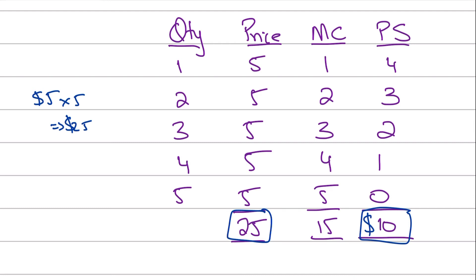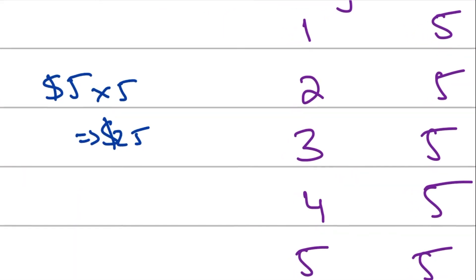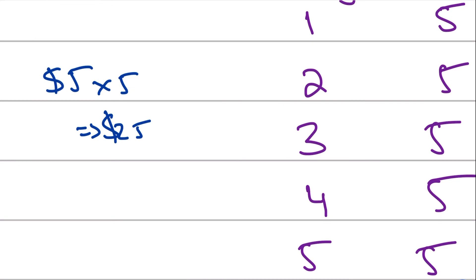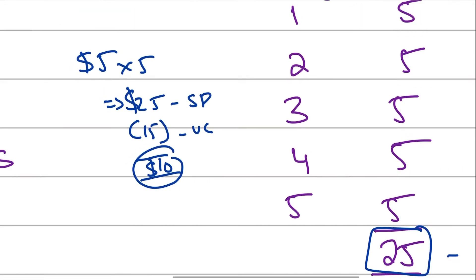If you sum all the individual marginal costs, you get the total variable cost of producing the five units, which is fifteen dollars. So twenty-five minus fifteen gives ten dollars — the producer is better off by ten dollars. Remember, this is not profit. To calculate profit you also need to deduct fixed costs. Producer surplus minus fixed costs equals profit.